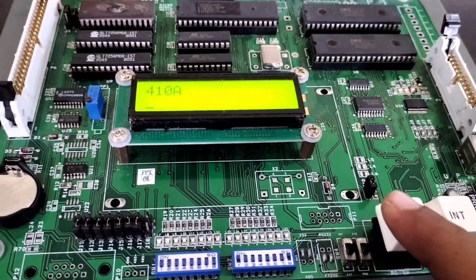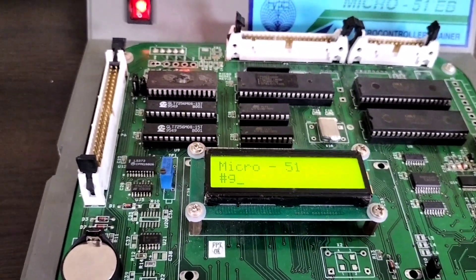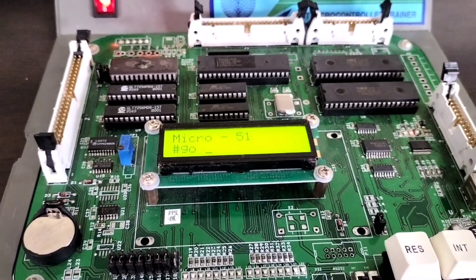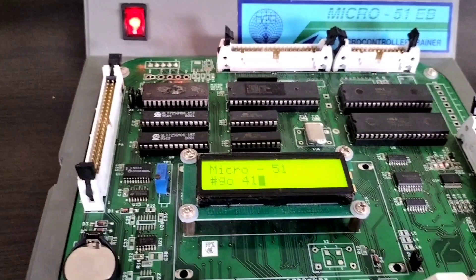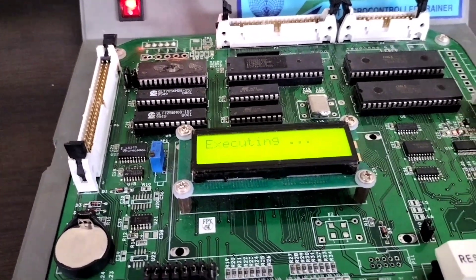So now we have to press reset in the kit. So press reset. Now we have to execute the program. Why? Because already the data is given. So GO. What is the starting address? 4100. So use 4100. So it will be giving as executing.